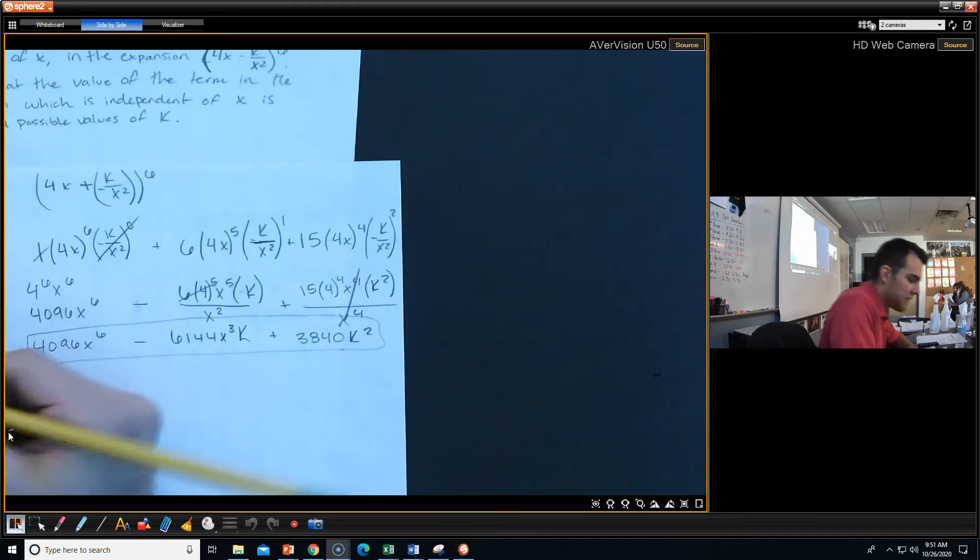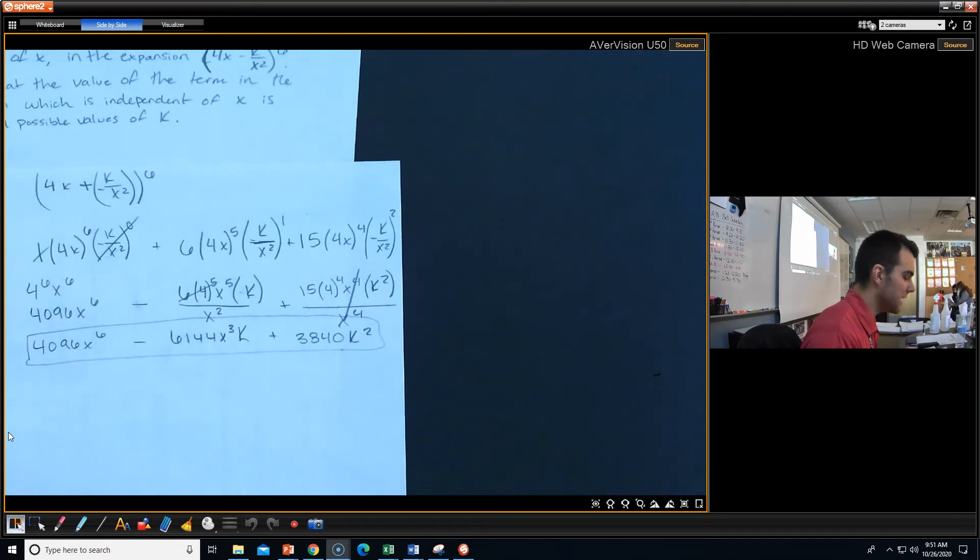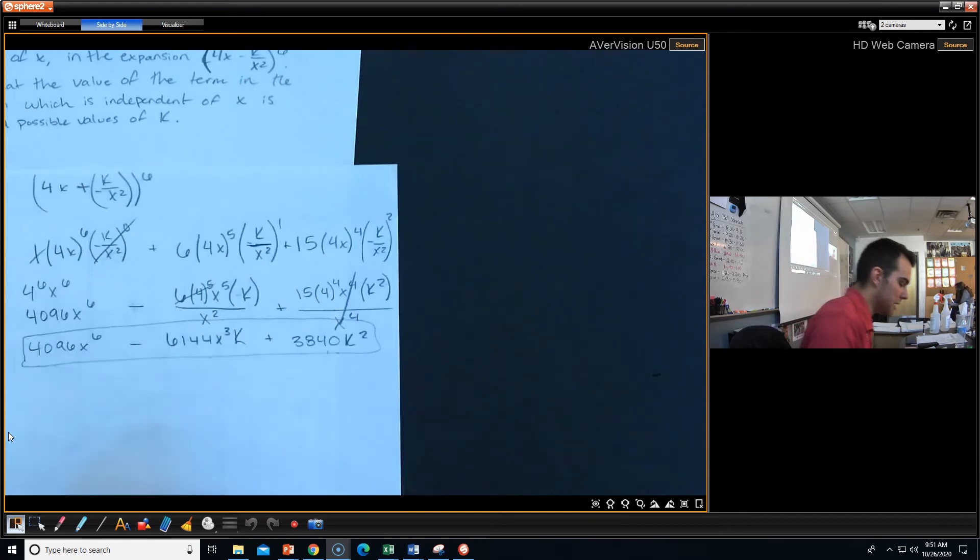Part two is saying, given that the value of the term in the expansion which is independent of x is 240, find possible values of k. This is basically a way of saying that the constant is 240, the term with no x values in there. So of these three terms, which one is that going to be? k squared, right? That doesn't have an x in it, so that is our guy right there.